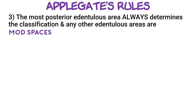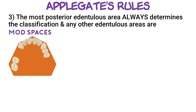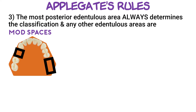Rule number 3 says that the most posterior edentulous area always determines the classification, and any other edentulous areas are considered modification spaces. Take this arch for example — there are two edentulous areas here. The most posterior edentulous area, which is on the second quadrant, will determine our Kennedy classification, which in this case is Class 2. The other edentulous area becomes a modification space. Since there's only one other edentulous area, we call it Mod 1, and hence the full classification for this arch is Class 2 Mod 1.